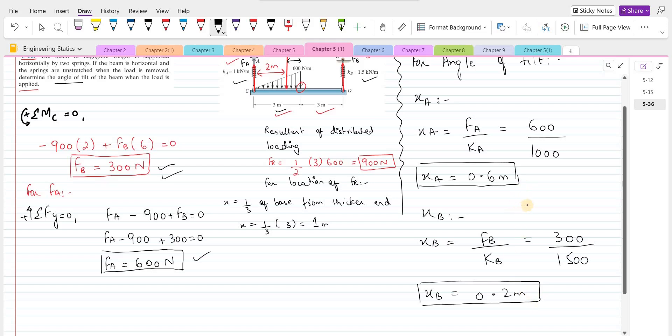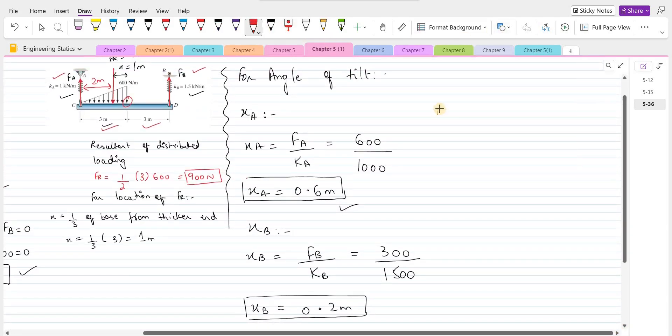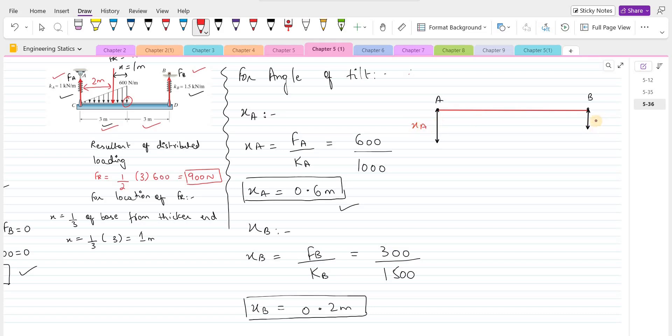So which spring has stretched more? Definitely this spring A. So for the angle of tilt, if this was the original position of the beam when the applied load was not present, so after the load is placed, the beam will deflect downwards by XA amount about the point A and it will deflect downward by the amount XB about the point B.